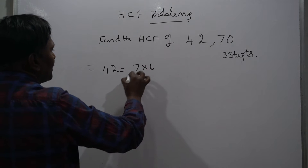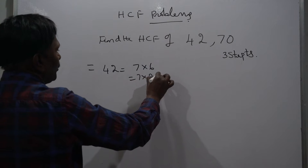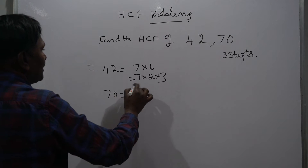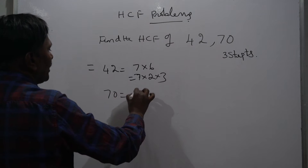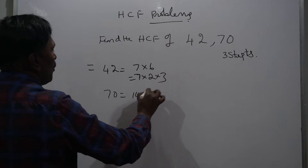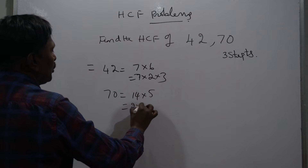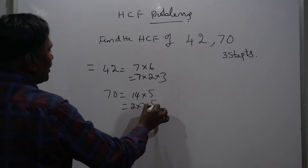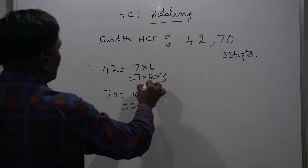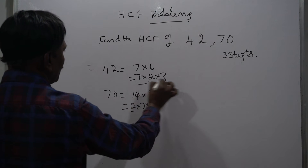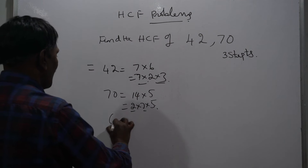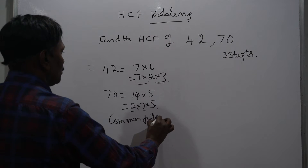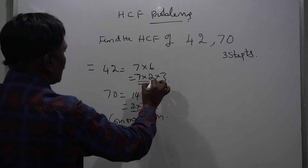42 can be written as 7 into 6, that is 7 into 2 into 3. Next, 70 can be written as 14 into 5, which is 2 into 7 into 5. These are all prime numbers. So the common factors are 2 and 7.